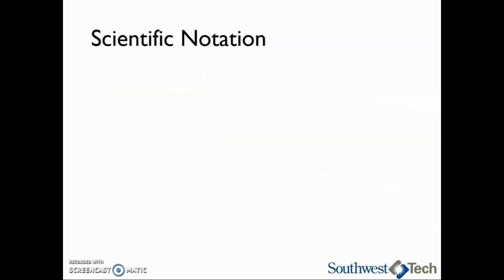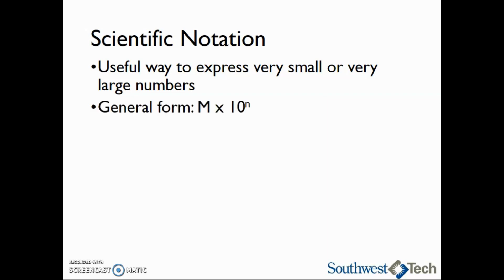Before we can talk about any kind of unit conversion, we're going to talk about scientific notation. Scientific notation is a useful way to express very small or very large numbers. The general form for scientific notation looks like M × 10^n. In this case, M is going to be a number between 1 and 10, and n is going to be the exponent or the power of 10.